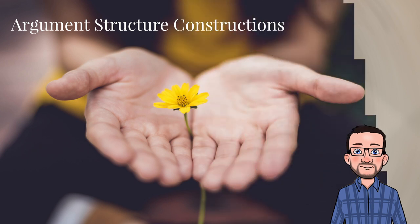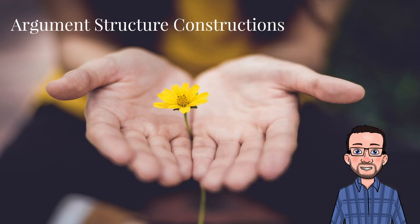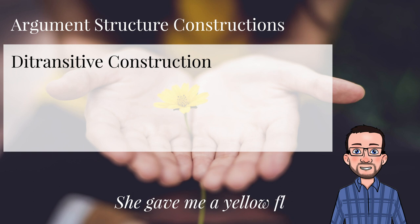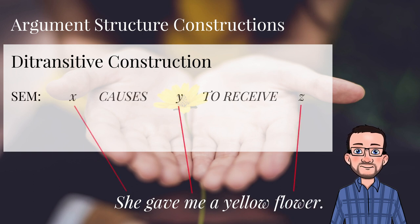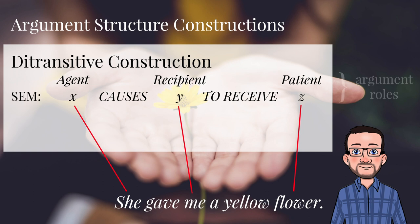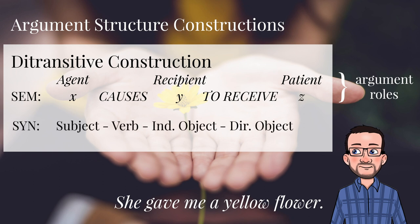The most famous of them is the ditransitive construction, sometimes also called the double object construction, as in the sentence she gave me a yellow flower. The underlying semantics of this sentence is something like x causes y to receive z. To replace x, y and z with labels that we can understand better: an agent causes some recipient to receive a patient. These are called the argument roles of the construction. The syntactic pattern that is conventionally associated with these argument roles is subject, verb, indirect object and direct object.